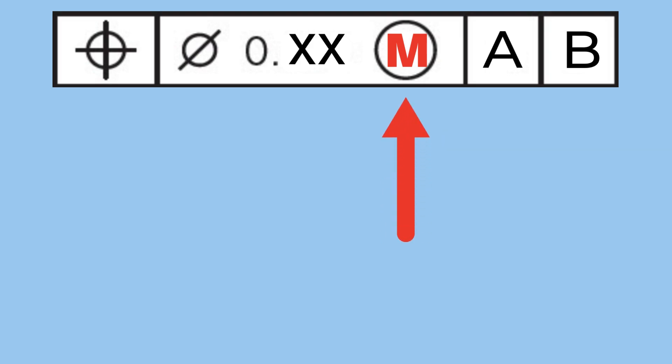Position tolerance is the maximum deviation allowed from the true position. Next we have the material condition, which is not mandatory. If present, it can be L for least material condition, or M for maximum material condition. In most cases M is used, but more on that later.